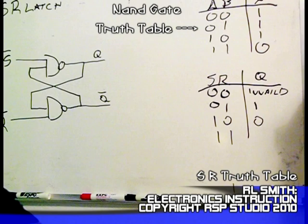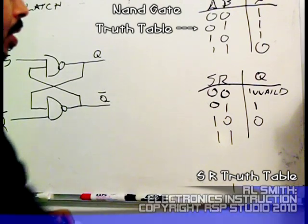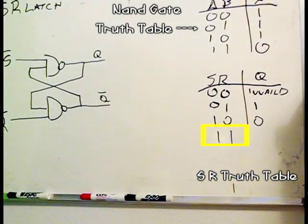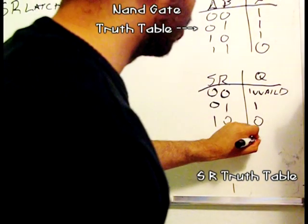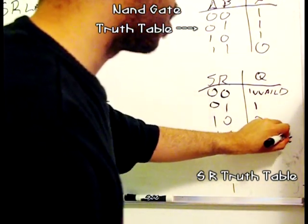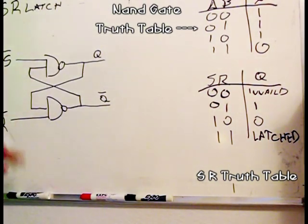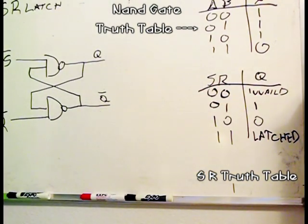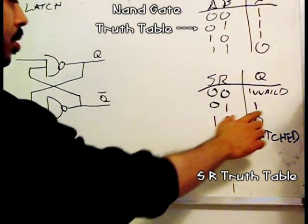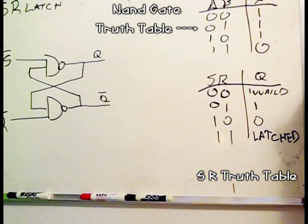Now here's where the memory comes in. This SR latch has a latch state, and it's when we have a one and a one on S and R. This is going to be our latched state. So latch state, one and a one. Four states: zero-zero is invalid, we're not going to work with that. We can set a one, we can reset a zero for Q, and we can latch the gate.